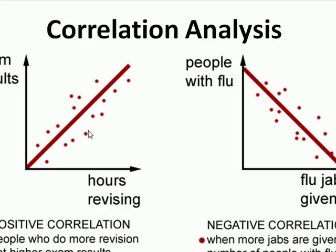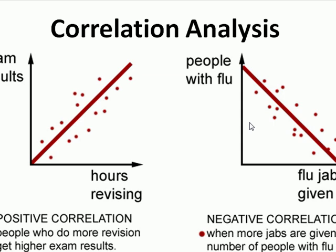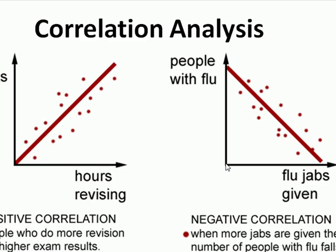These two plots show the positive and negative correlation between two variables. This is a positive correlation — as the number of hours of revising a lesson increases, the exam results improve as well. This is a negative relationship, which shows that the more flu jabs are given, the fewer people are affected with flu. When the number of people with flu is higher, it shows that there were no flu jabs given, but as the number of flu jabs given increases, the number of people affected with flu decreases.